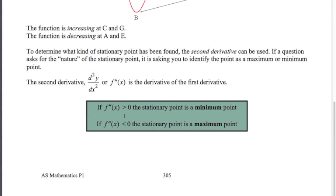If the second derivative at the point you've found is greater than zero, then that point is a minimum point. If the second derivative is less than zero, then that is a maximum point. There are a few exceptions — for example, with y = x⁴, at x = 0 both the first and second derivatives equal zero. You won't encounter those in the exam, so you just need to know this test. Think of it as opposites: second derivative greater than zero means minimum; less than zero means maximum.